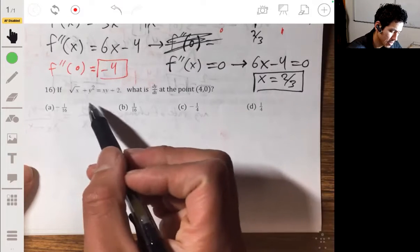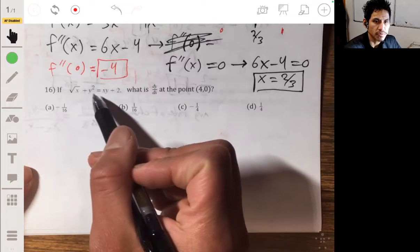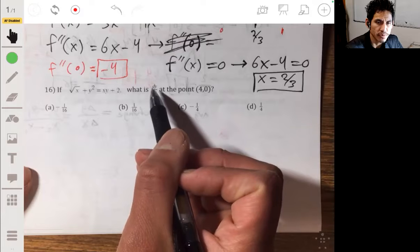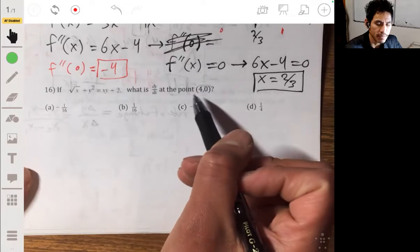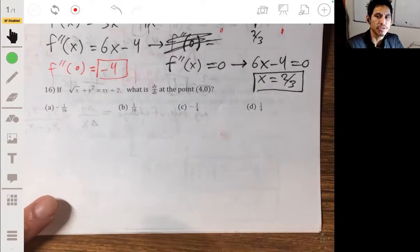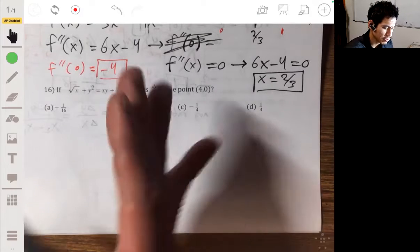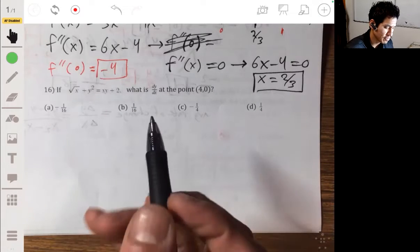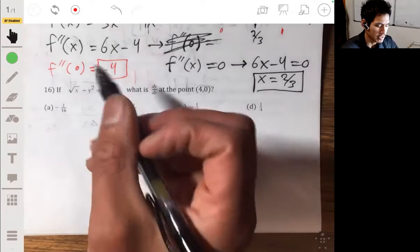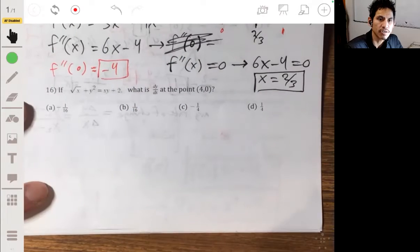Alright, so for problem 16, we have this function square root of x plus y squared equals xy plus 2, and we're trying to find the derivative with respect to x at a point (4,0). So this is an example where we're going to use implicit differentiation, and as long as you remember that it's pretty much just differentiating the same way you always do, but whenever you differentiate y you got to multiply it by dy/dx, it's actually not that hard.